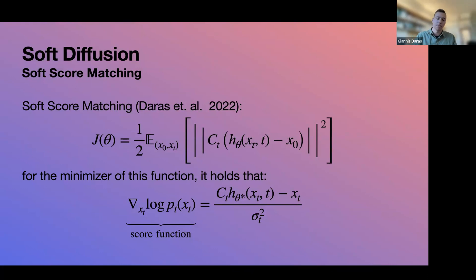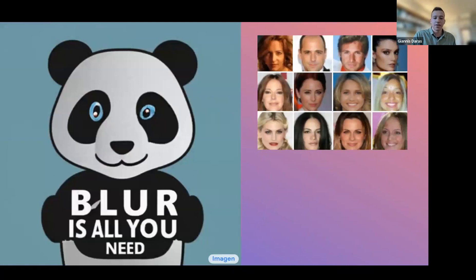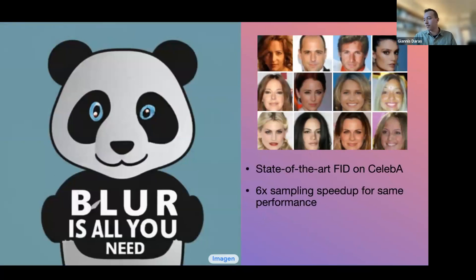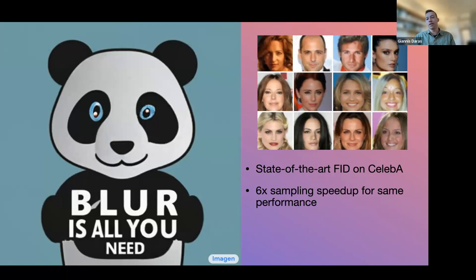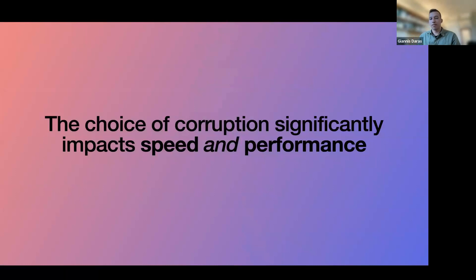Soft diffusion turns out to be a very good idea. By just changing the corruption procedure — from adding noise to blurring with a little noise on top — while keeping the model size, architecture, and training hyperparameters the same, you get a significant boost and can achieve state-of-the-art FID scores for image generation. You also get a speed-up essentially for free, which matters because diffusion models normally require hundreds of thousands of reverse process iterations per sample. The key message: the choice of corruption matters significantly for both speed and performance.